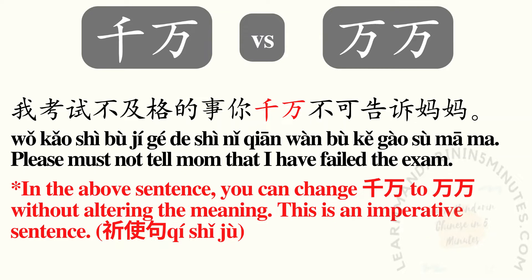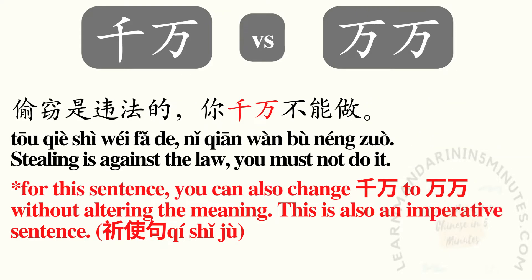我考试不及格的事，你千万不可告诉妈妈。 You must not tell mom that I have failed the examination. In the above sentence, you can change 千万 to 万万 without altering the meaning, because this is an imperative sentence. So you can say: 我考试不及格的事，你万万不可告诉妈妈。